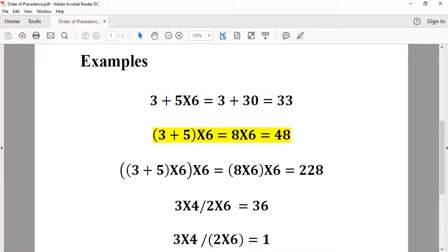3 plus 5 inside parentheses, times 6. The parentheses have first priority, so 3 plus 5 equals 8, then 8 times 6 equals 48.